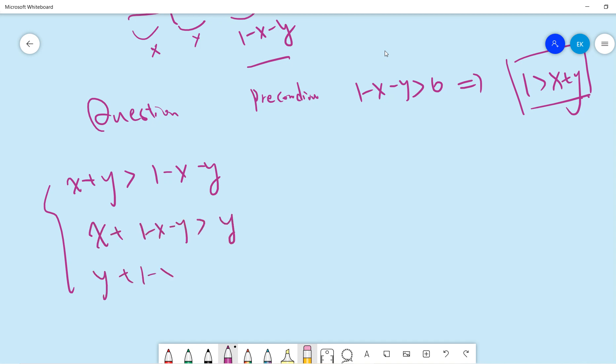So y plus this is the only condition what we have. So what we have is x plus y larger than half. And this is y less than half and x less than half. Okay.